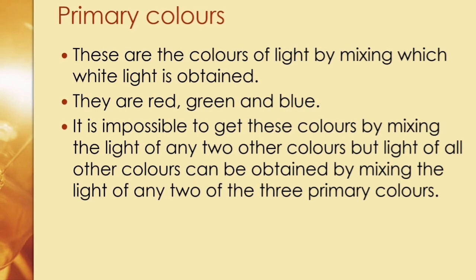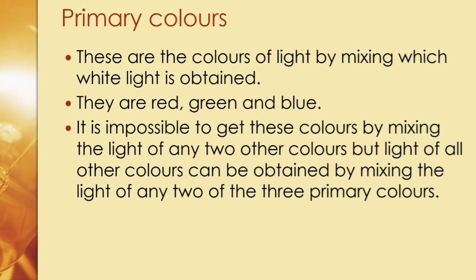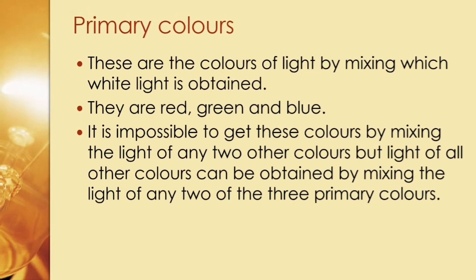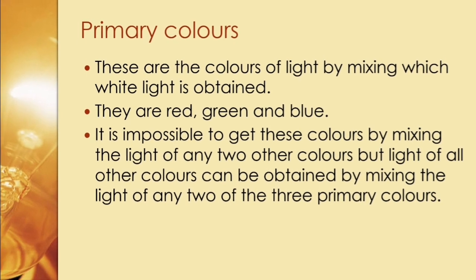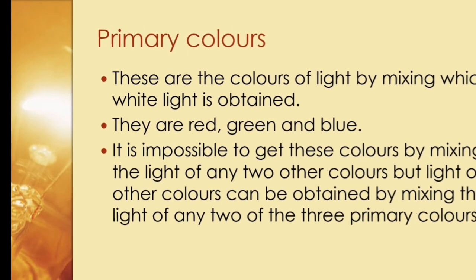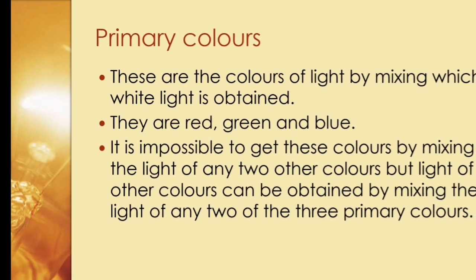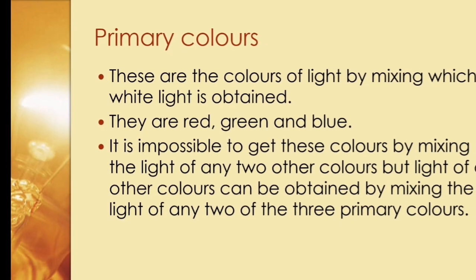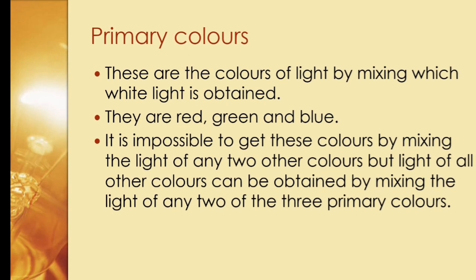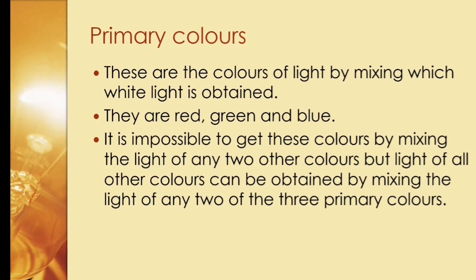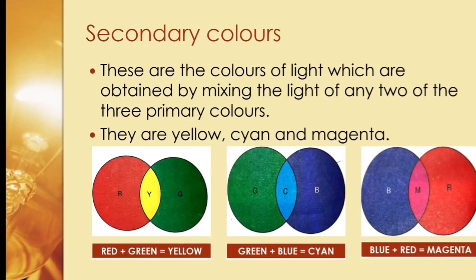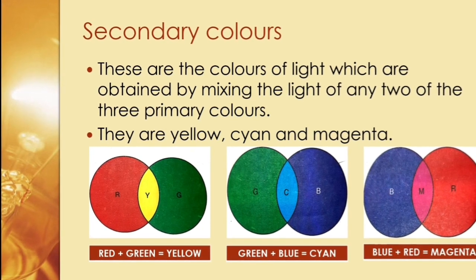Red, green, and blue are called primary colors. By mixing the light of these colors, we obtain white light. These colors of light cannot be obtained by mixing any other colors. But by mixing any two of these primary colors, we get different colors of light — these are called secondary colors.